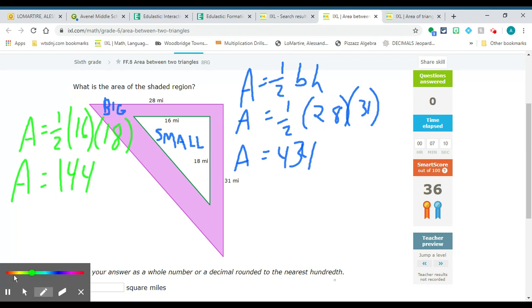As you could imagine, the big triangle contains the little triangle, and that little triangle is taking up some space. So, in order for me to find the area of the shaded region, I need to subtract.